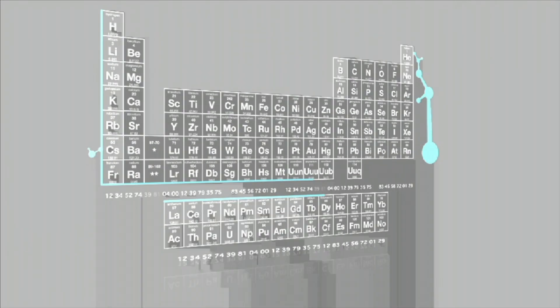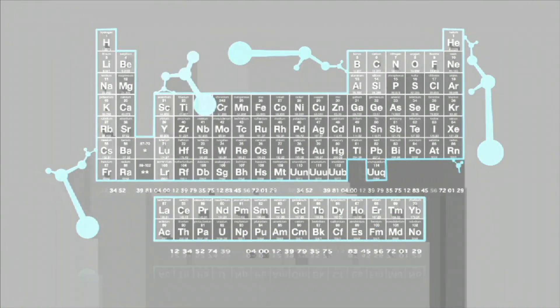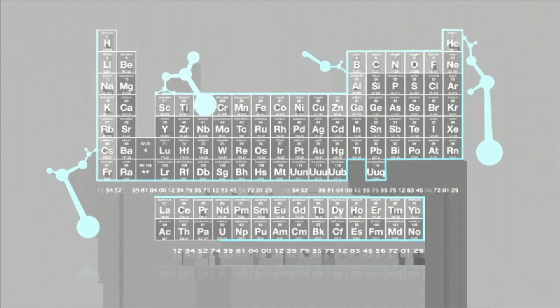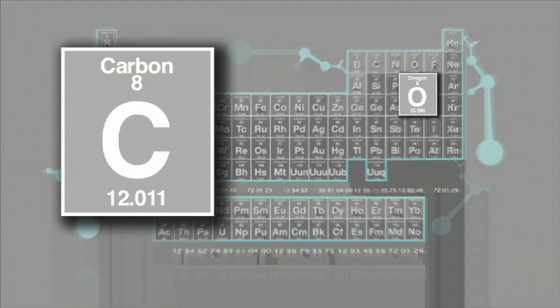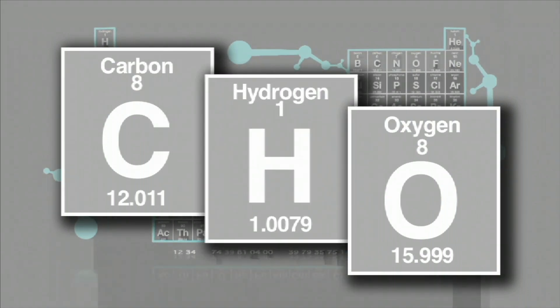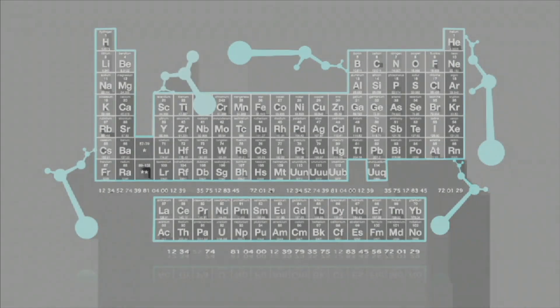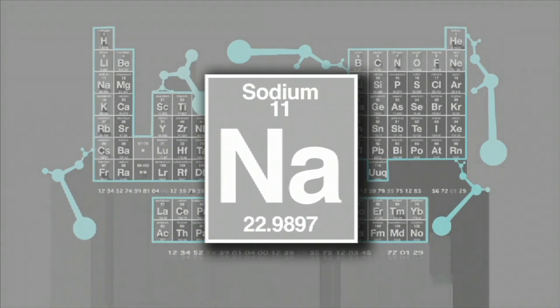Each element has a symbol that is usually the first letter or two of its name. For example, the symbol for carbon is C. Oxygen is O. Hydrogen is H. However, some elements, like sodium, symbol Na, come from their Latin name, natrium.